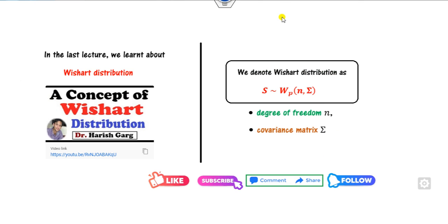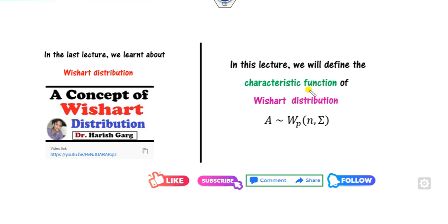We denote the Wishart distribution or matrix as capital S, written as W. P is the dimension of the distribution, N is the degree of freedom, and Sigma is the positive definite covariance matrix. In this lecture, we will see how we can define the characteristic function of this Wishart distribution.